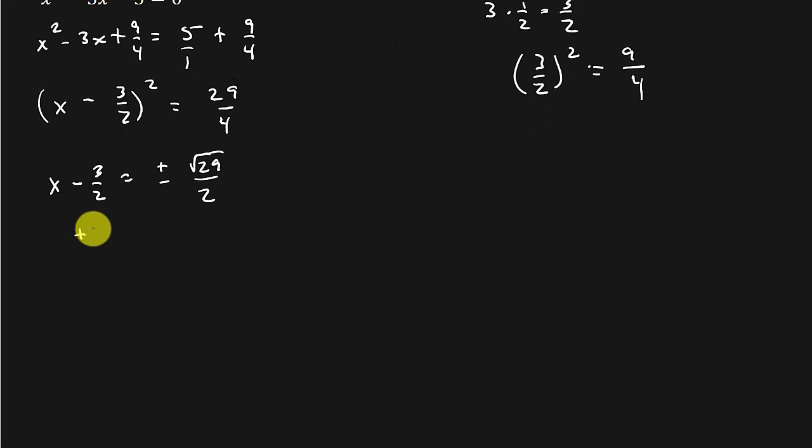And then we add the 3 halves to both sides. And we get x is equal to 3 halves plus or minus the square root of 29 over 2. And there's your answer.